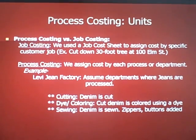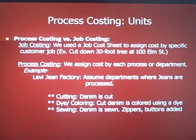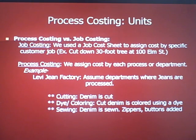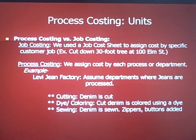So let's distinguish between process costing and job costing. With job costing, we use the job cost sheet to assign costs by specific customer jobs. For example, if we cut down a 30-foot tree at 100 Elm Street, we had a job cost sheet for that to collect all the costs for that job. Process costing is different — we assign costs by each process or department. In my Levi's jeans example, we have a cutting department where the raw denim is cut, a dye and coloring department where we dye it a certain color, and finally a sewing area where we add zippers, buttons, rhinestones, and those are our three departments the jeans pass through.